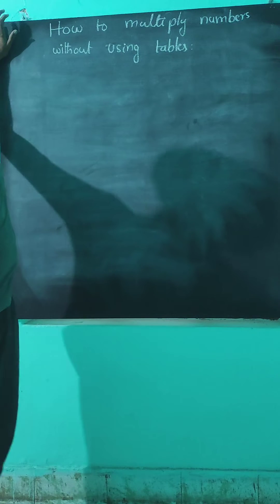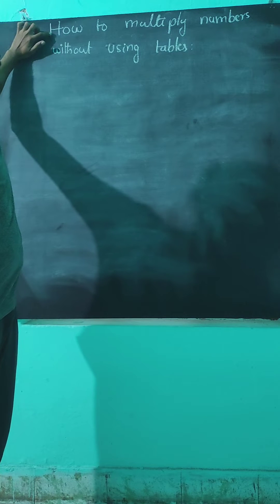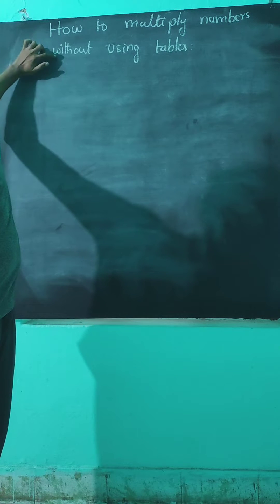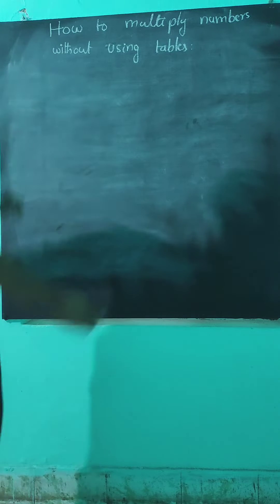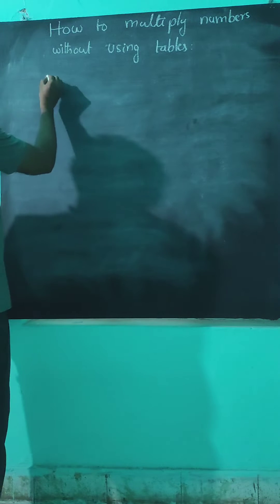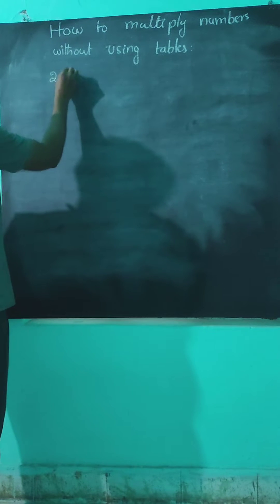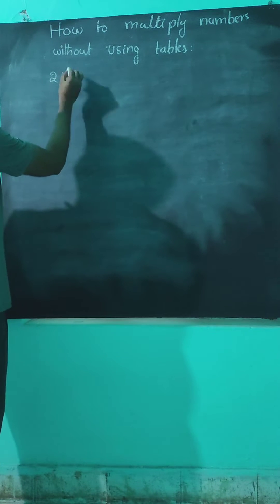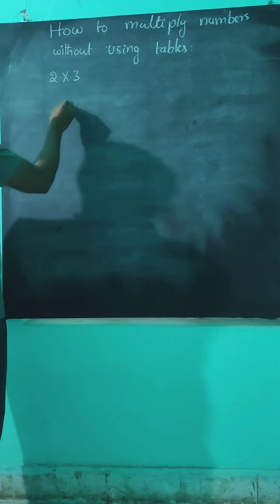How to multiply a number without using tables. First, 2 x 3 — 1 digit numbers.